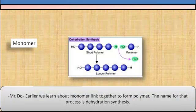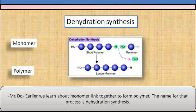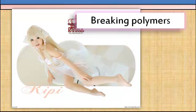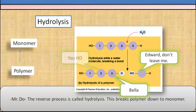Earlier we learned about monomers linking together to form polymers. The name for that process is called dehydration synthesis. The reverse process is called hydrolysis. This breaks polymers down to monomers.